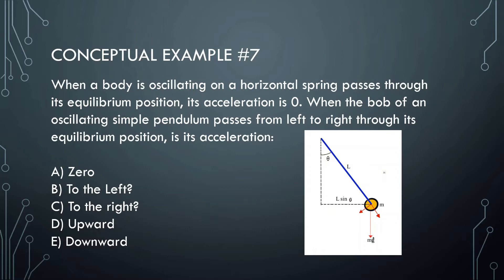Let's look at this conceptual example. When a body is oscillating on a horizontal spring and passes through its equilibrium position, its acceleration is zero. When the bob of an oscillating simple pendulum passes from left to right through its equilibrium position, is its acceleration zero, to the left, to the right, upward, or downward?